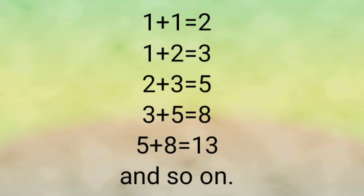Can you see the pattern here? To find the next number in the pattern, you add the previous two numbers. So, 1 plus 1 is equal to 2, 1 plus 2 is equal to 3, 2 plus 3 is equal to 5, 3 plus 5 is equal to 8, 5 plus 8 is equal to 13, and so on. The numbers in the Fibonacci sequence are called the Fibonacci numbers.